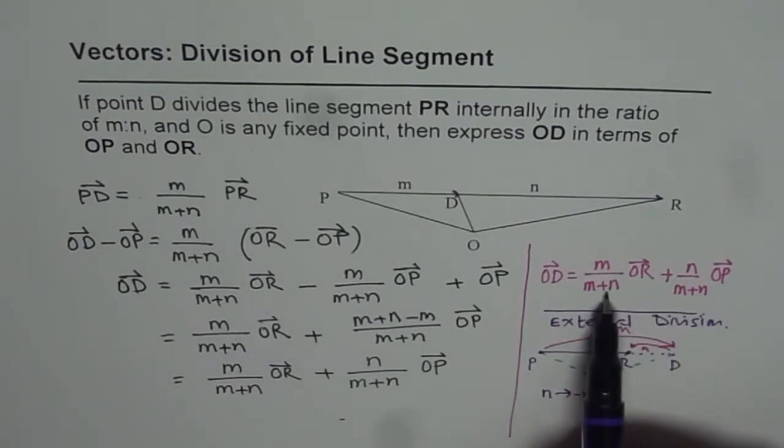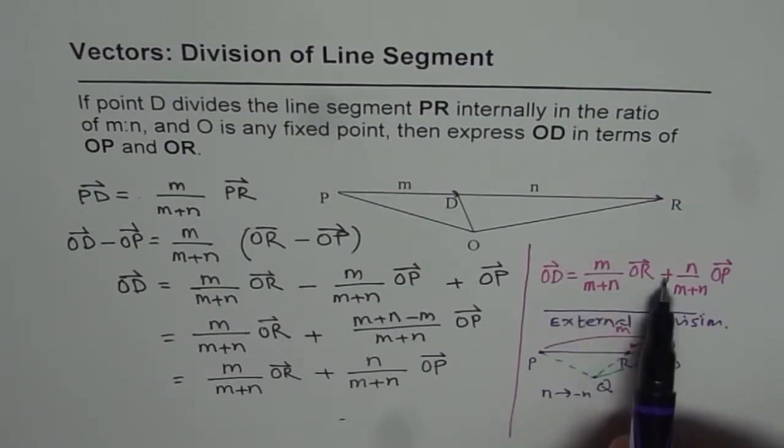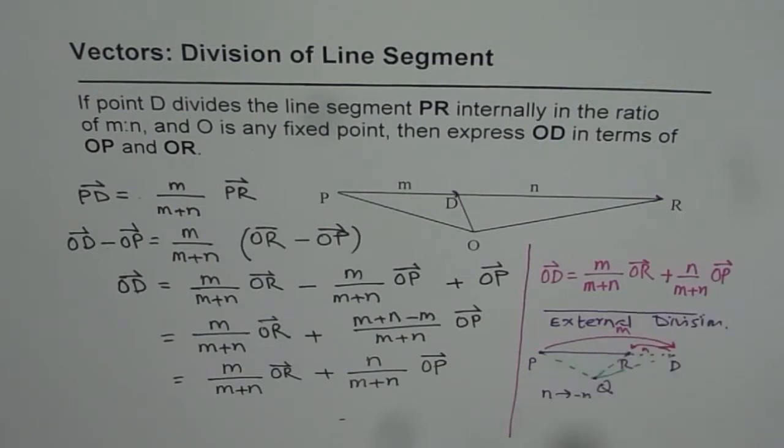Replacing N with minus N will give you M over M minus N and here the sign will be negative N. So you get a formula for external division also.